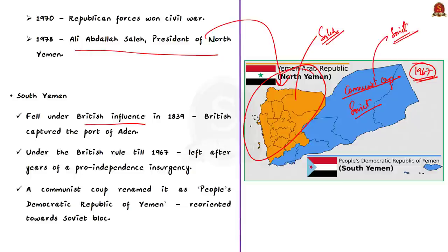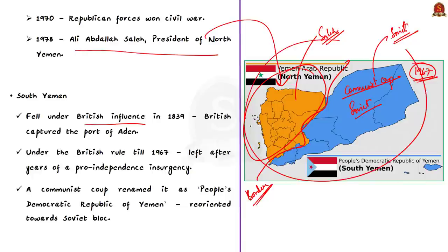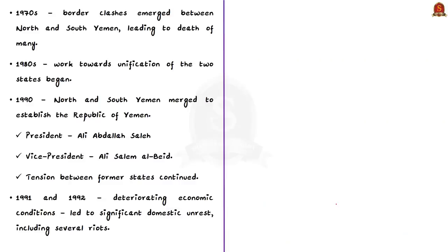In the later periods, border clashes happened between the two states since the 1970s. In the 1980s, work towards unification began, and in 1990, North and South Yemen were merged and the Republic of Yemen was established. The president of the Northern bloc, Ali Abdullah Saleh, was made the president of the combined Yemen.